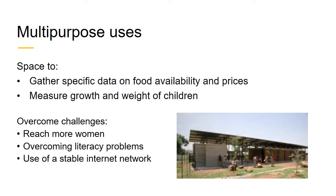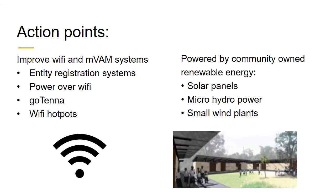Specific data on food availability and prices could be directly gathered, combined with measuring growth and weight of children. By using community centers, it is possible to reach more women, overcome illiteracy problems, and make use of a stable internet network. To transfer collected data, it is necessary to improve Wi-Fi and mVAM systems, including the entity registry system, Power over Wi-Fi, GoTenna, and Wi-Fi hotspots. These must be powered by community-owned renewable energy.